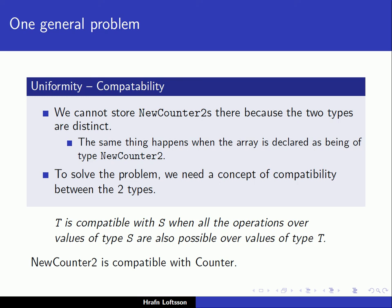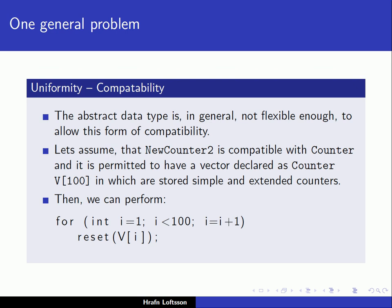What do we mean by compatibility? We can say that a type T is compatible with type S when all the operations over values of type S are also possible over values of type T. So if we think about new counter 2 and counter, all the operations over values of type counter are also possible over values of type new counter. So new counter 2 is compatible with counter in that sense. The problem is that the abstract data type mechanism is not flexible enough to allow this form of compatibility.